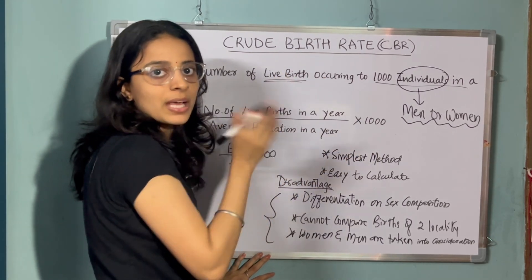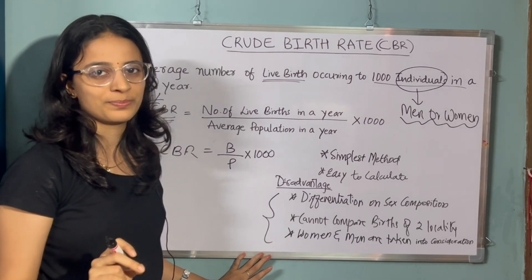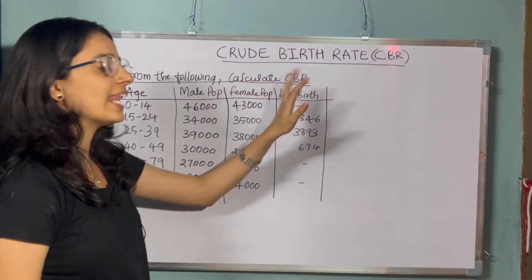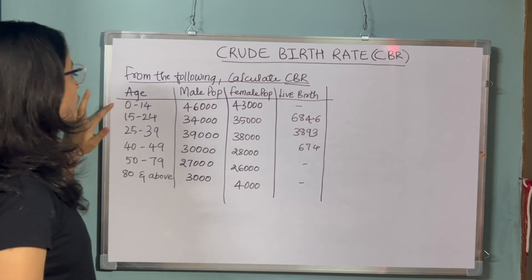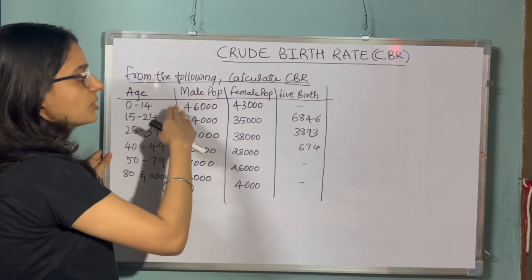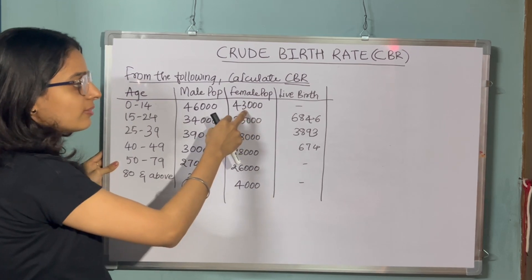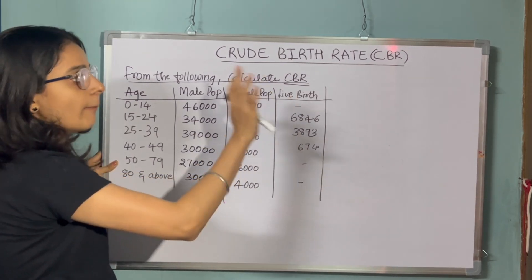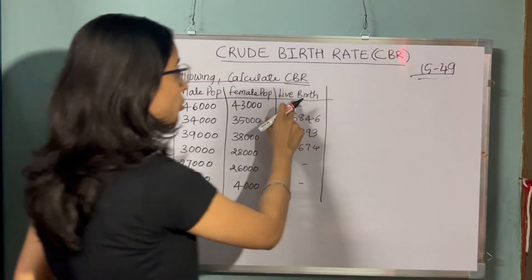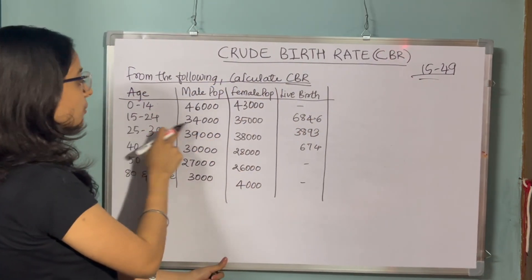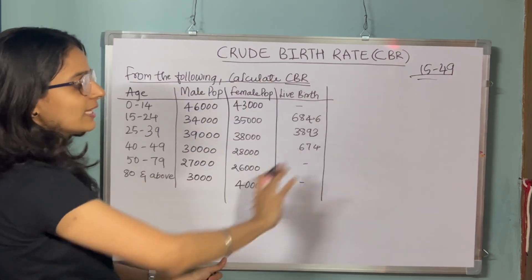Let us solve the first problem. You can take a screenshot or I suggest you maintain notes and write it down. The problem: from the following data, calculate CBR. The information given includes age groups, male population, female population, and live births. For age 0–14: male 46,000, female 43,000, live births nil (since childbearing age is 15–49). For age 15–24: male 34,000, female 35,000, live births 6,846. All information is given across the age groups.